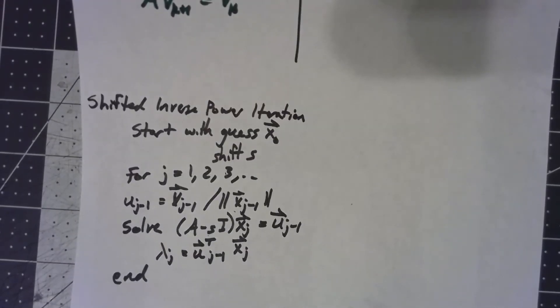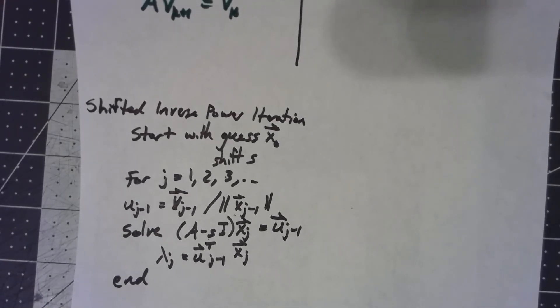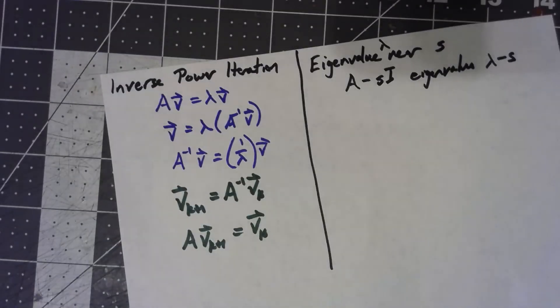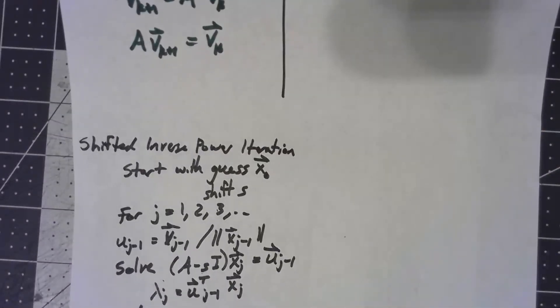Now the question is, how do we find the shift s? And honestly, there isn't a really good way to do this. You kind of have to just guess at different shifts, run the process for different values of s, trying to find different eigenvalues using it.